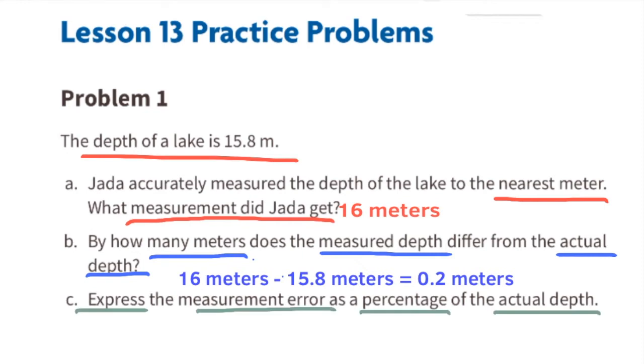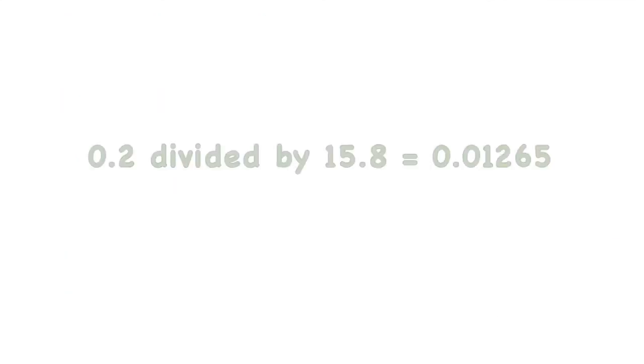Part C: Express the measurement error as a percentage of the actual depth. 0.2 divided by 15.8 equals approximately 0.0127, which written as a percent is 1.27 percent.